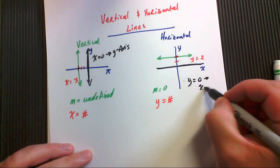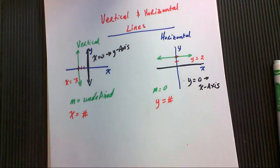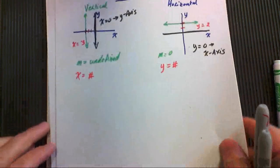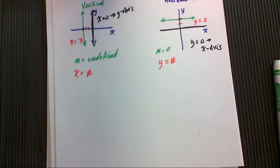So that's the x-axis, the equation, okay? So now let's talk about what it looks like when we find these kinds of slopes.